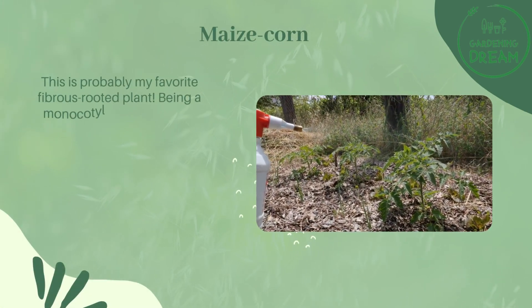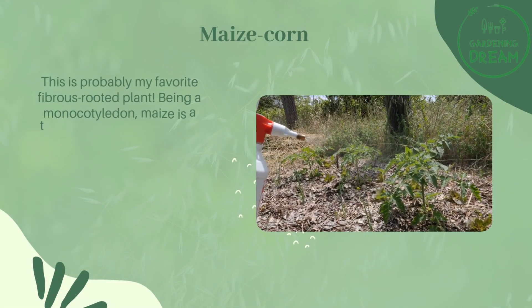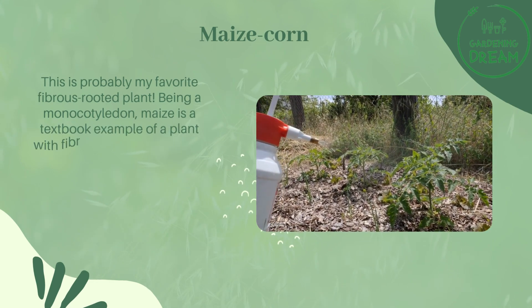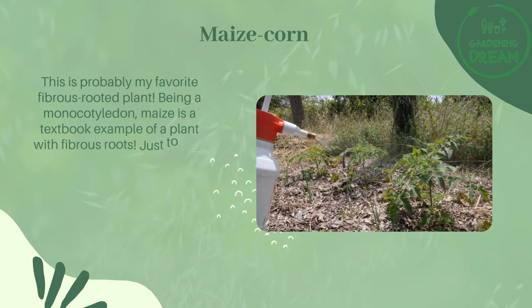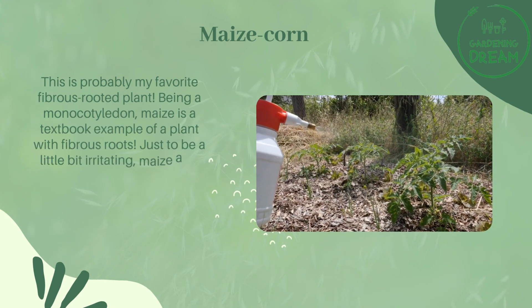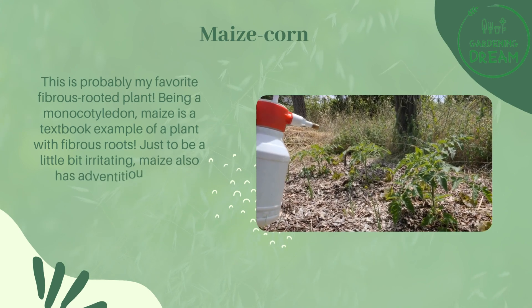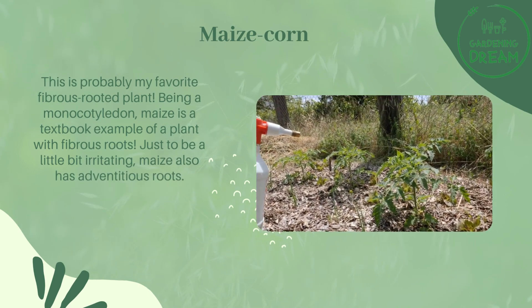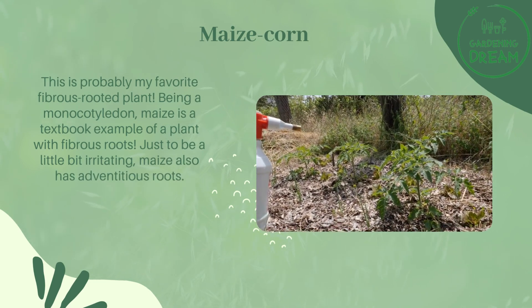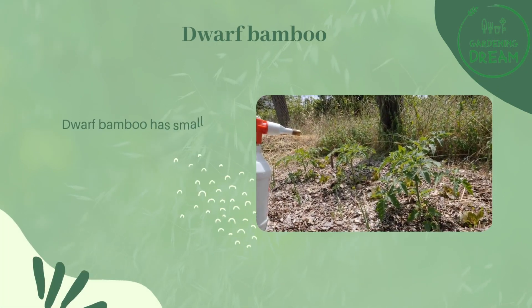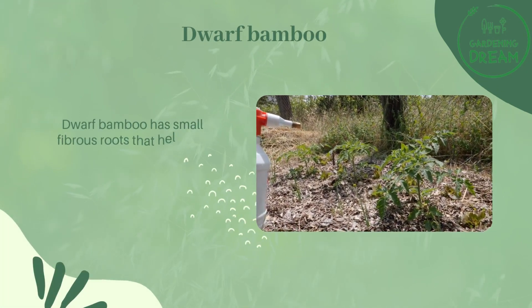Maize, or corn, is probably my favorite fibrous-rooted plant. Being a monocot, maize is a textbook example of a plant with fibrous roots — though, just to be a little irritating, maize also has adventitious roots.